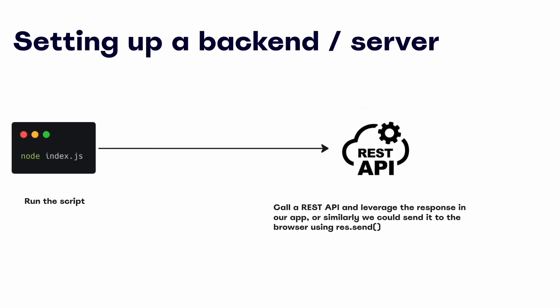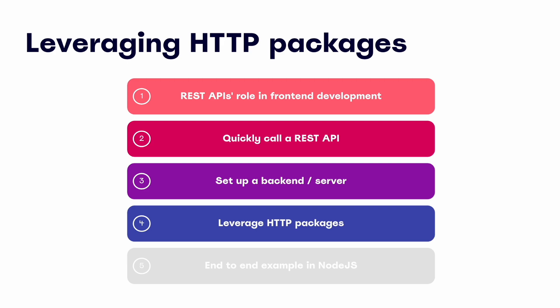But just setting up a server by itself isn't super useful, right? So instead of simply sending some hello world text to the browser within our app.get function, we could instead make a request to a REST API within this function and utilize the response in another part of our app, or send the response from that request to our browser similar to the hello world text. Let's talk about some functional approaches to making API requests within this type of environment — specifically a couple of common HTTP packages.